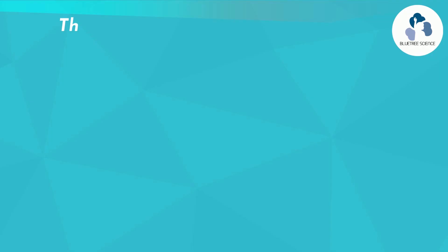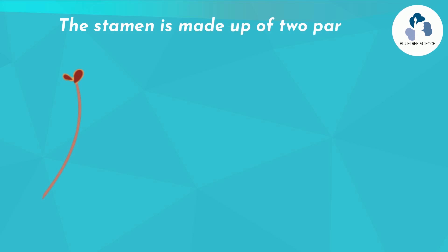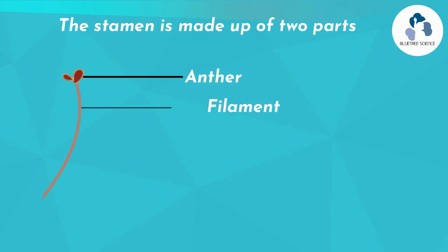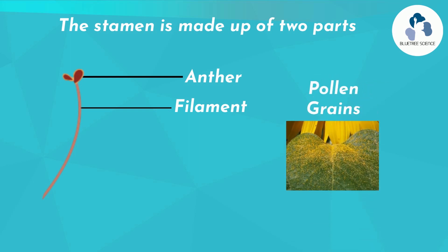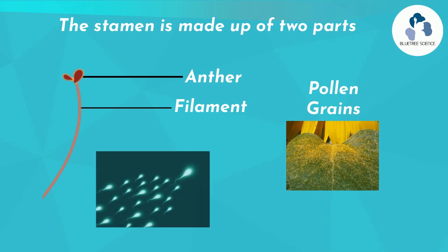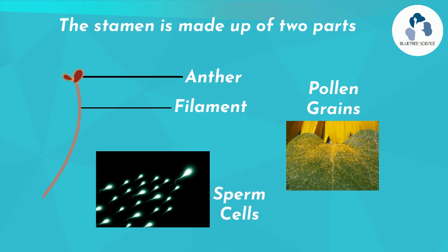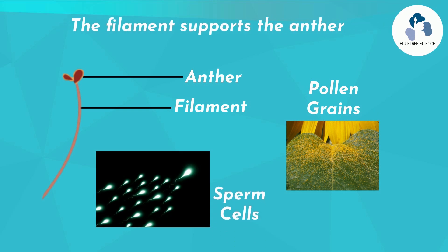The stamen is made up of two parts called the anther and the filament. The anther contains pollen grains, which contain male reproductive sperm cells. The filament is the stalk that supports the anther.